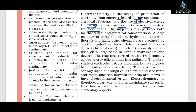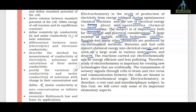The subject is of importance both for theoretical and practical considerations. A large number of metals, sodium hydroxide, chlorine, fluorine and many other chemicals are produced by electrochemical methods. Batteries and fuel cells convert chemical energy into electrical energy and are used on large scale in various instruments and devices. The reactions carried out electrochemically can be energy efficient and less polluting.